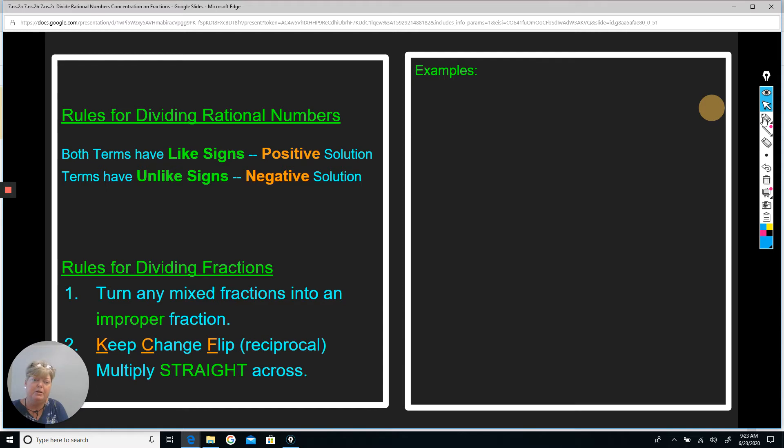So we're going to look at some problems and get started on those. Our first problem we're going to look at is negative 4 over 7 divided by an equal number of fractions. So we're good with that.